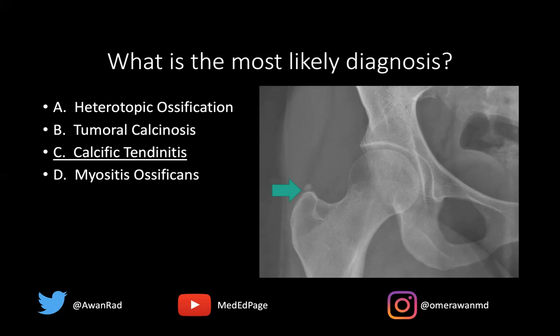This is not myositis ossificans because that would really need a history of trauma, and again, it's bone — not calcium — that's formed in myositis ossificans. This is not bone; this is calcification. It's amorphous and it's globular.